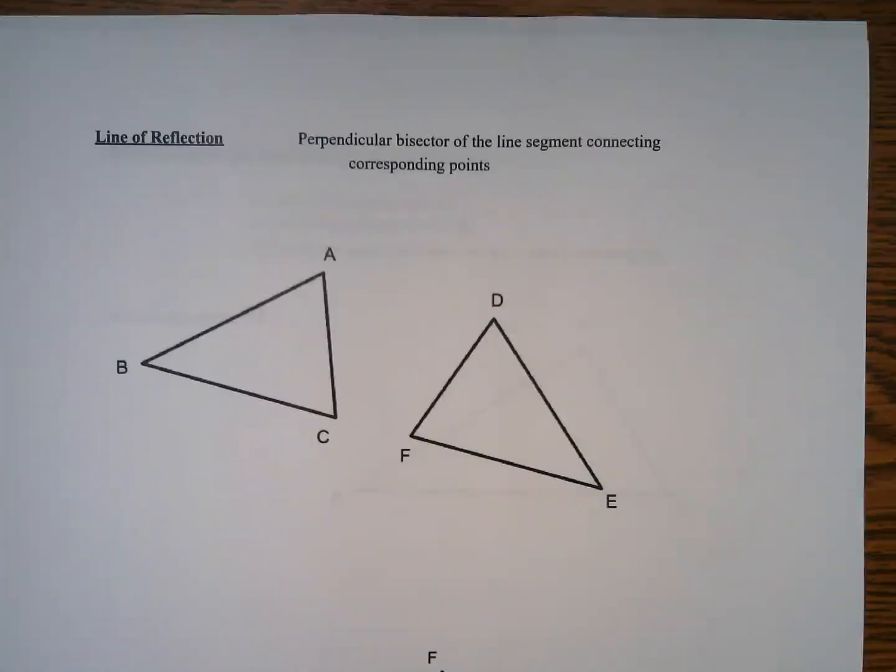To construct a line of reflection, you need to do the perpendicular bisector of the line segment connecting corresponding points.